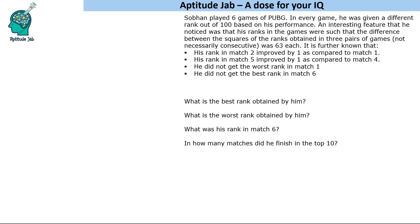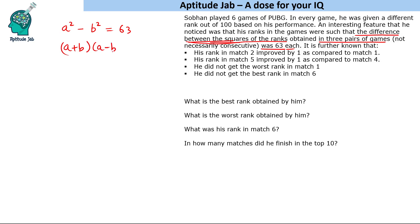Let us understand the statement that the difference between the squares of ranks in three pairs of games was 63 each. Difference between squares means: if one number is a² and the second is b², then the difference is a² - b². So a² - b² = 63 happened three times across the six games. Using the identity, a² - b² = (a + b)(a - b), so (a + b)(a - b) = 63.